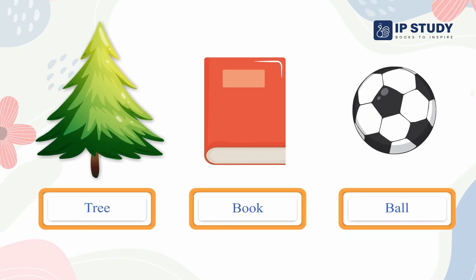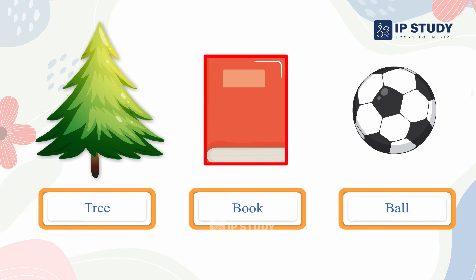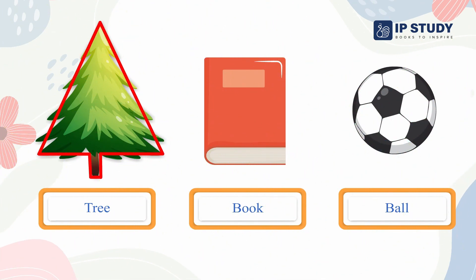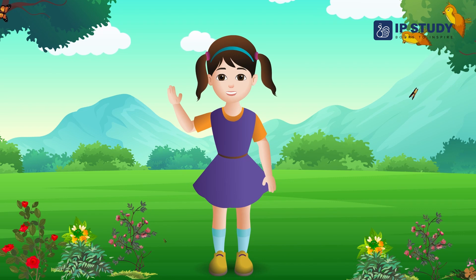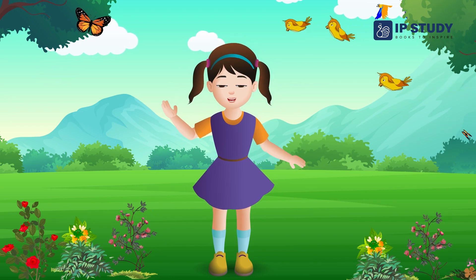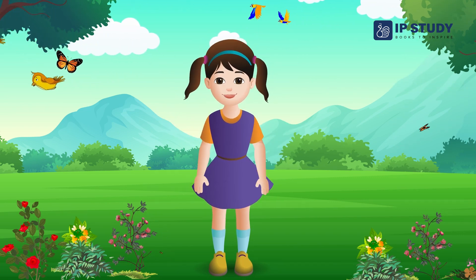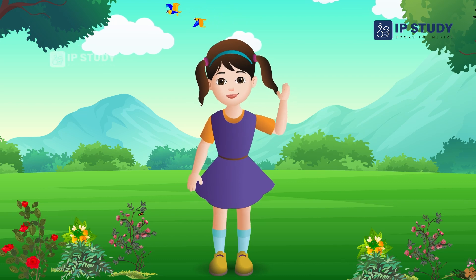Now can you tell me which of these shapes is a triangle — a tree, a book, or a ball? That's right — the tree is in a triangle shape. Our next chapter is about number names. We will learn about that when we meet again — till then, bye bye!